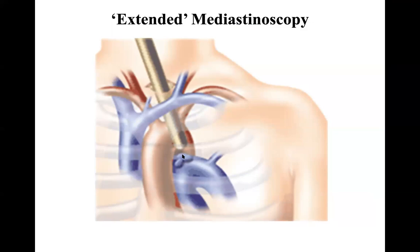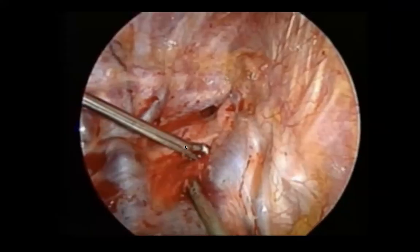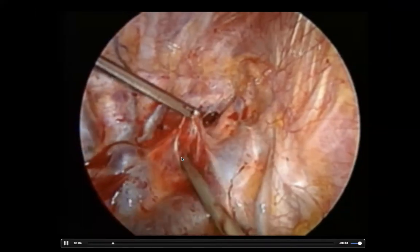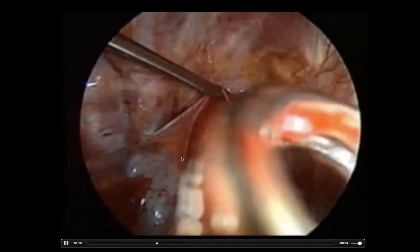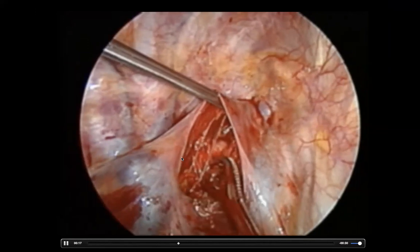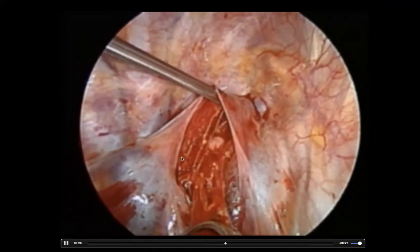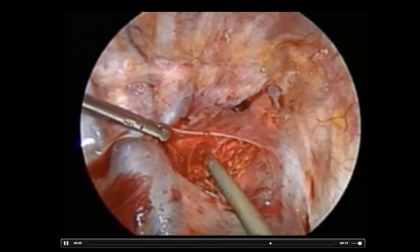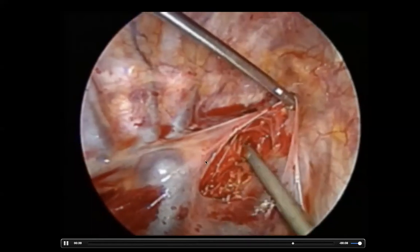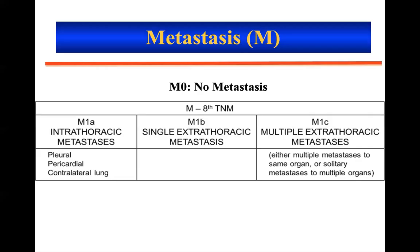Video thoracoscopy is the last method to evaluate lymph nodes before operation. This video shows dissection and biopsy technique for patients with right-sided tumors. If mediastinoscopy is not performed, it is a good method to take biopsy before the operation. The upper paratracheal area, stations 4 and 2 lymph nodes, and the area just above the brachiocephalic vein — station 2R upper right paratracheal — can all be accessed.